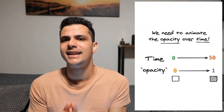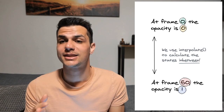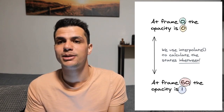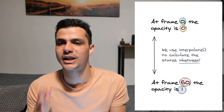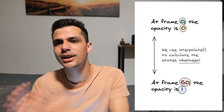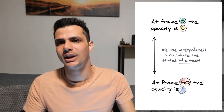We know the start and end point of our animation, but we also need to know all the states in between. If Remotion tells us the current frame is 25 — the halfway point — we need to calculate the opacity for that frame, which is 0.5. Calculating all these in-between states is what's called interpolation.